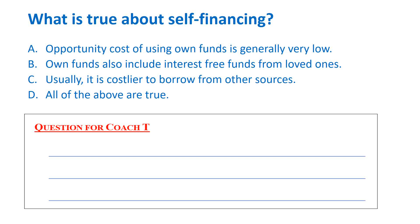Even the first statement is true: when you use your own funds, you're pulling money from a savings account or safety deposits, which normally don't pay much interest. So you are foregoing something, but it's not a whole lot. Own funds also include interest-free funds from loved ones, and it is costlier to borrow from other sources because they charge much higher interest.